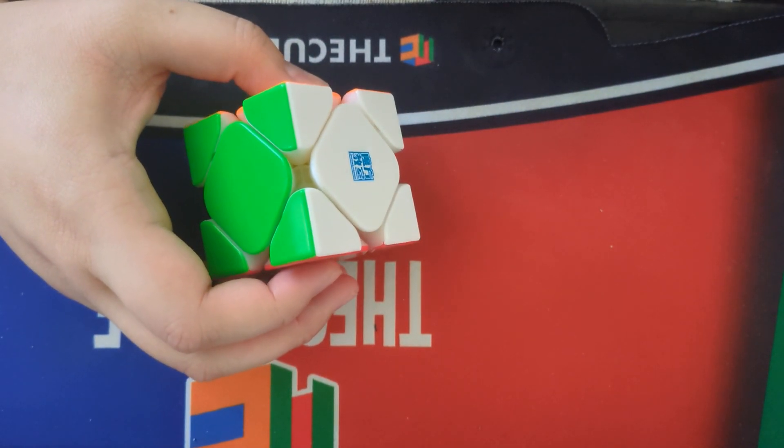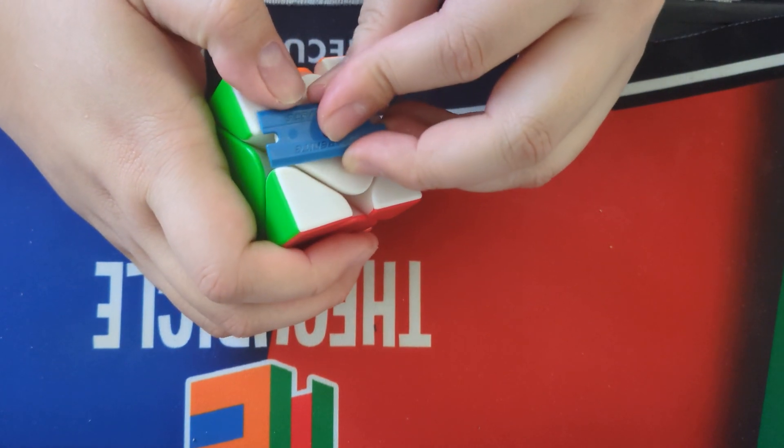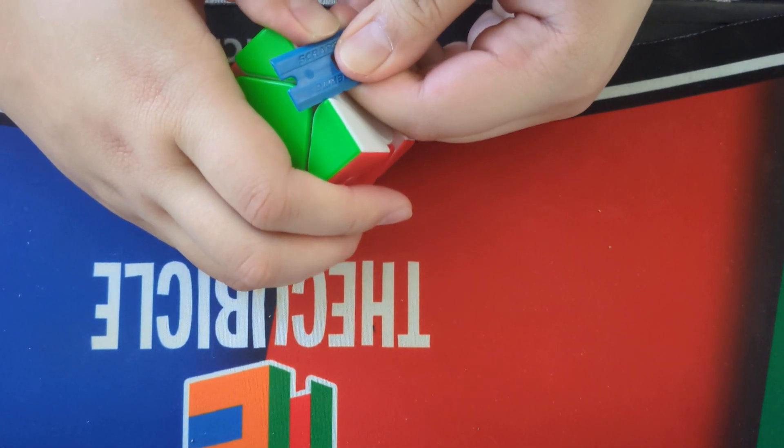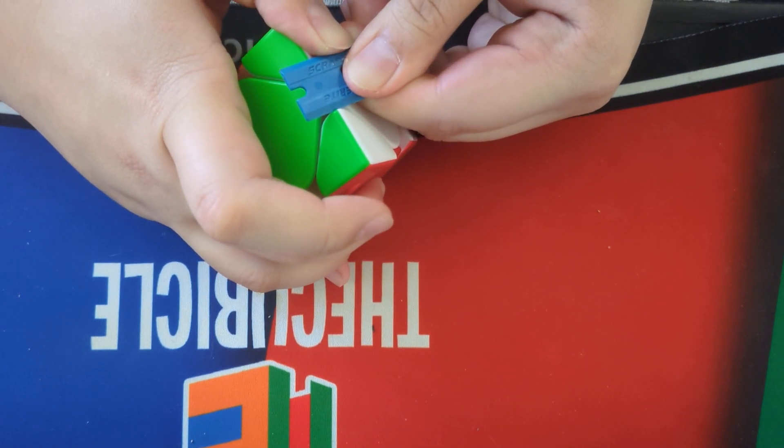So what we can do is just use a sticker razor, kind of get underneath here, just push it from the corners right about here to lift that cap back up.